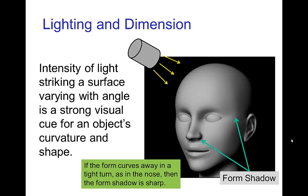This is a very important effect in lighting because a lot of the sense of dimension for a form is due to this effect — that the intensity of light striking a surface varies with angle. This is a very strong cue of the curvature and shape. Notice that the head has a fairly smooth curvature and we have a gradual darkening, whereas around the nose it's a much tighter curve, and so we have much more contrast from the bright parts to the darker parts around the nose. These are form shadows; we'll see more about those in another tutorial.